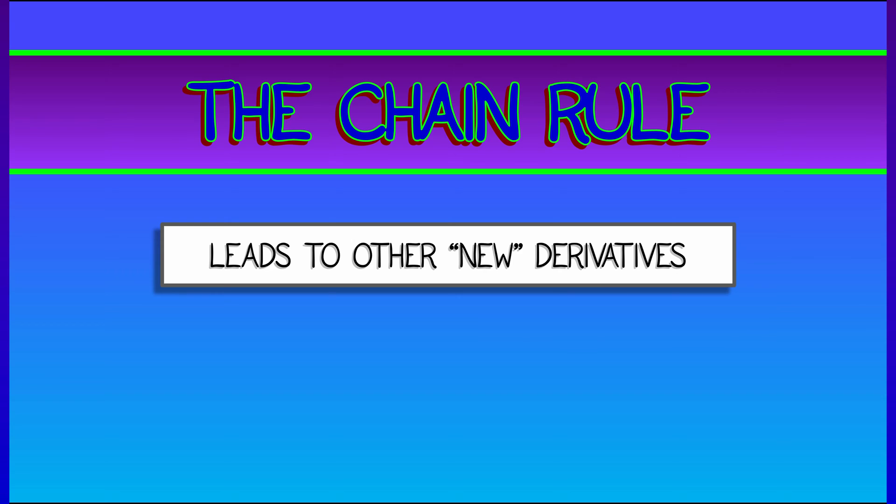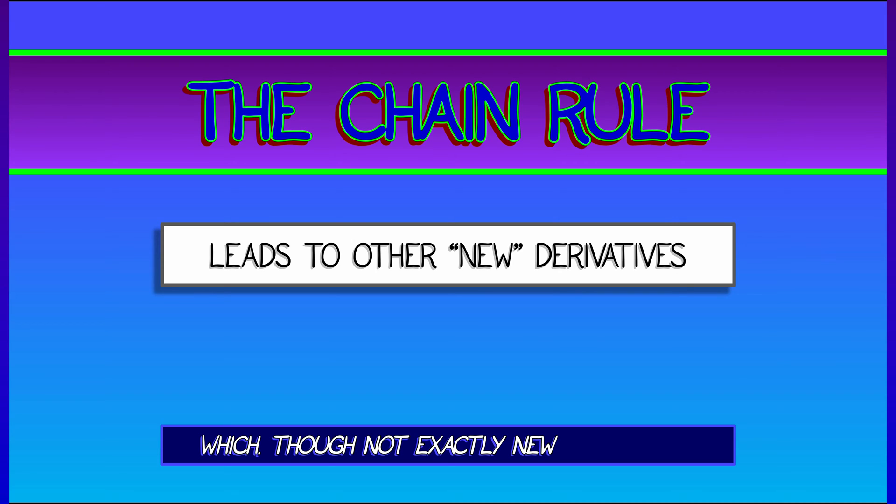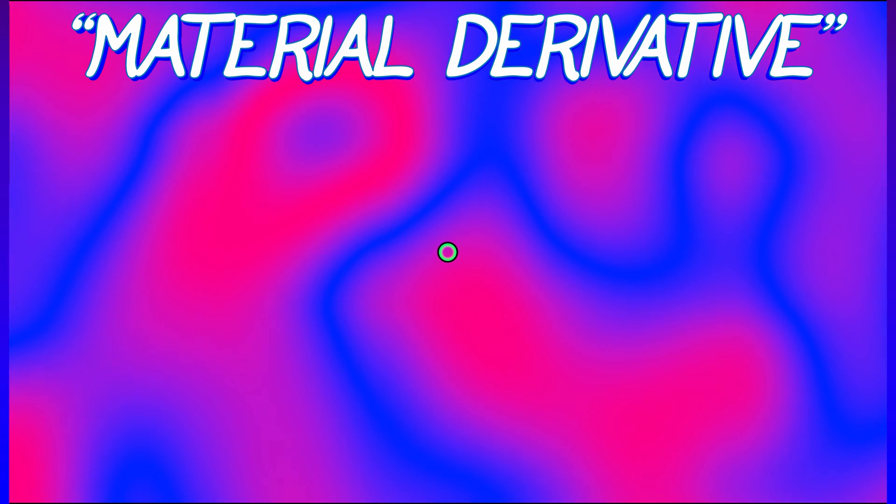Now, the chain rule leads to other new derivatives as well, which are not exactly new but nevertheless useful. One of the best examples is something called the material derivative.